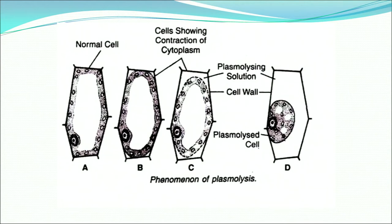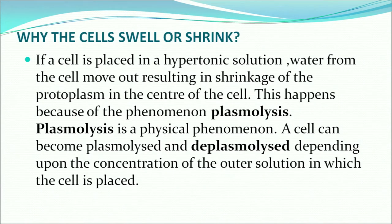Here is an illustration of plasmolysis. Plasmolysis and imbibition are more or less interlinked — you can see why cells swell or shrink. If a cell is placed in a hypertonic solution, water from the cell moves out, resulting in shrinkage of the protoplasm in the center of the cell. This happens because of the phenomenon of plasmolysis, which is a physical phenomenon. Diffusion, osmosis and plasmolysis are all physical phenomena. A cell can become plasmolyzed and deplasmolyzed depending upon the concentration of the outer solution.